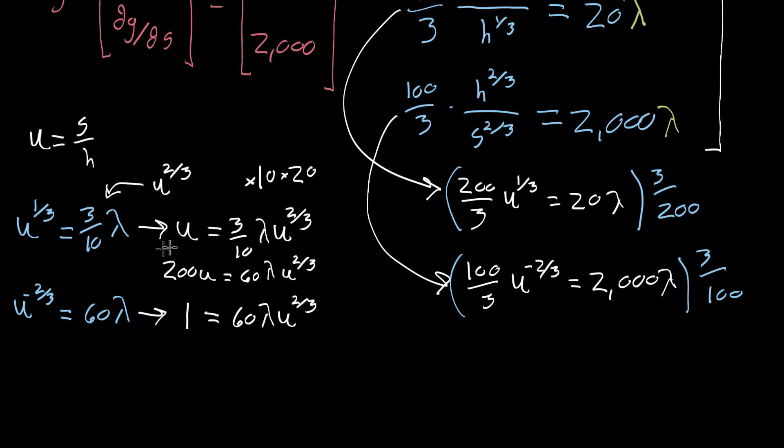And now these two equations, these two equations have the same right side. So this is the same as saying 200 times U is equal to, well, one. Because each one of those expressions equals the same complicated thing.